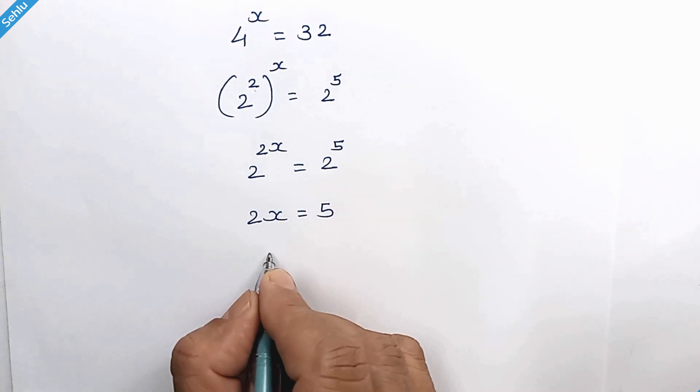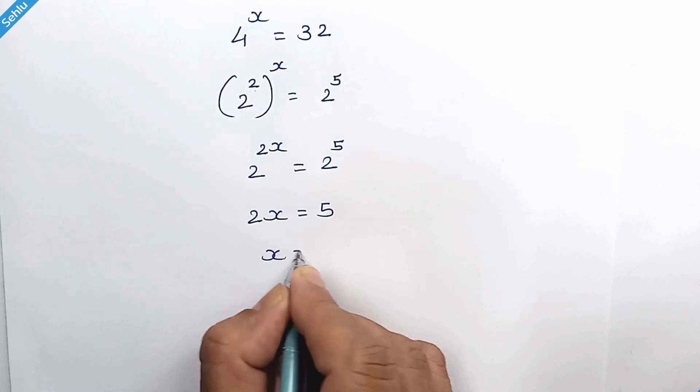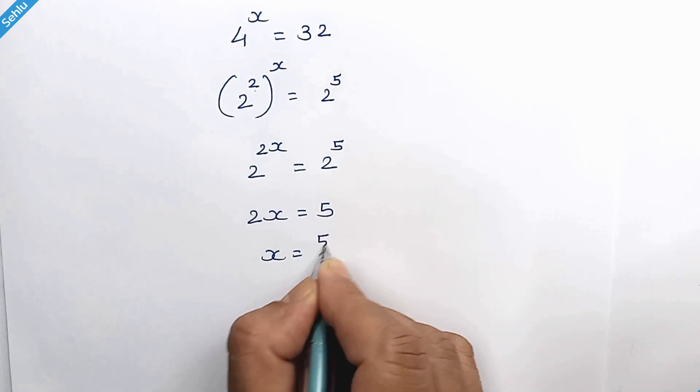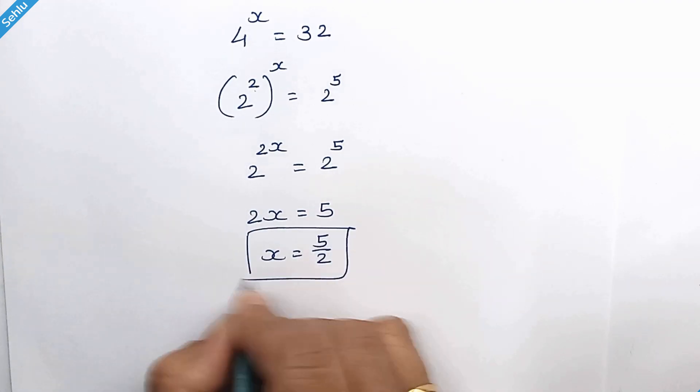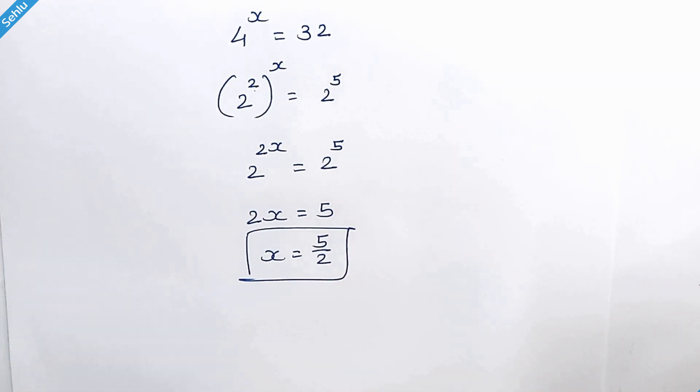So we have x is equal to 5 over 2 as the answer.